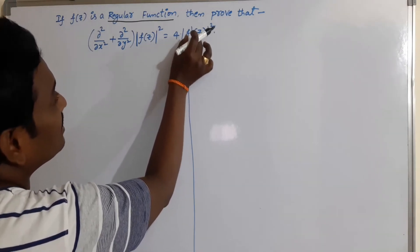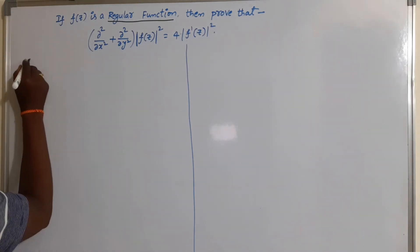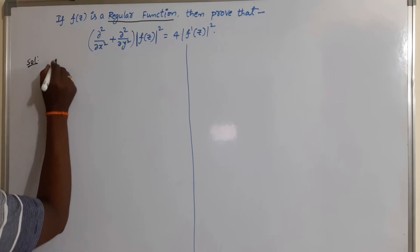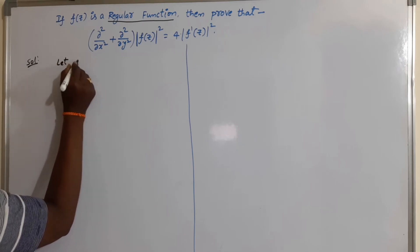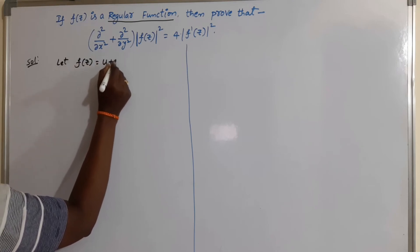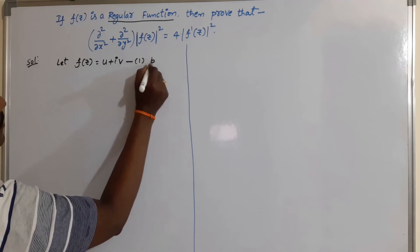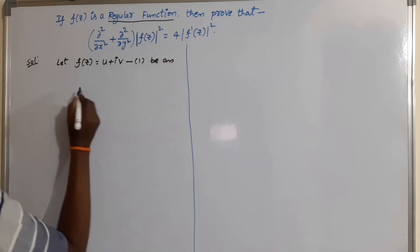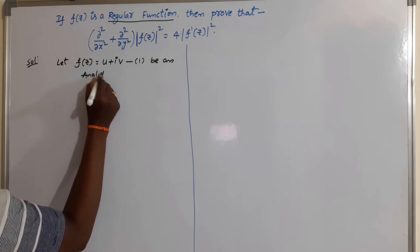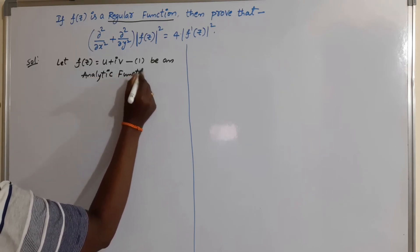f'(z) is nothing but the derivative of f(z). Regular function is nothing but analytic function. Analytic function is also known as regular function, and we have another name for analytic function which is holomorphic function. Let f(z) = u + iv, where u is the real part and v is the imaginary part, be an analytic function.